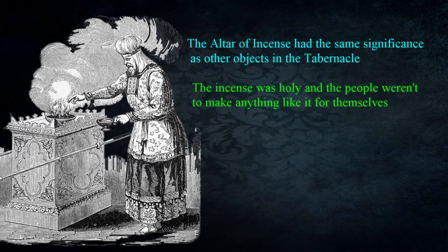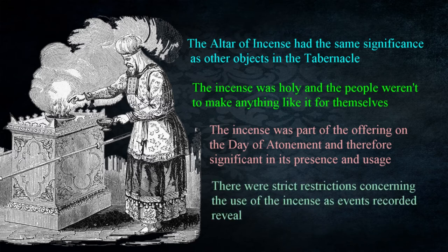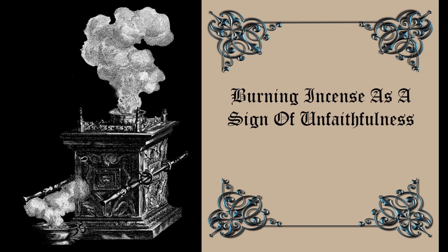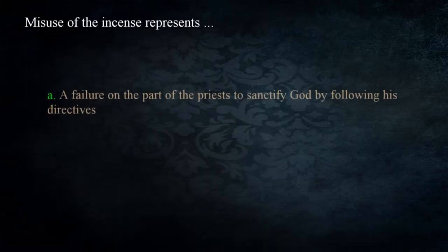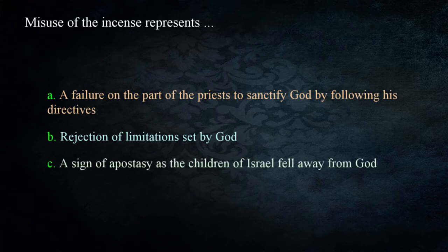We can see the altar of incense had the same significance as the other objects in the tabernacle. The incense itself was also holy, and the people weren't to make anything like it for personal use. The incense was part of the offering on the day of atonement and was significant in its presence and usage. There were strict restrictions concerning the use of the incense, and only the priests were to burn incense on the altar or present it before God on the day of atonement. As we examine the scriptures, we find examples of violations that brought about disastrous consequences. Misuse of the incense represents a failure on the part of the priest to sanctify God by following his directives, rejection of limitations set by God, and a sign of apostasy as the children of Israel fell away from God.